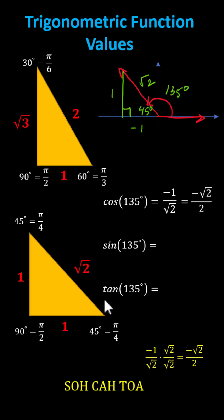Sine 135 degrees equals the ratio of the opposite side to the hypotenuse, which would be positive one divided by square root two, or square root two divided by two.